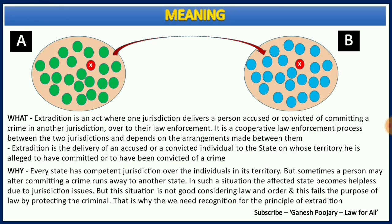The process of bringing him back to state A is all about extradition — the delivery of an accused or convicted individual to the state on whose territory he is alleged to have committed or been convicted of a crime. We need extradition because without it, people would commit crimes and run away. We also cannot just enter another state's jurisdiction without permission, so a clearly defined process is required to ensure peace, order, and punishment.